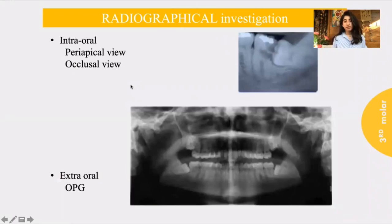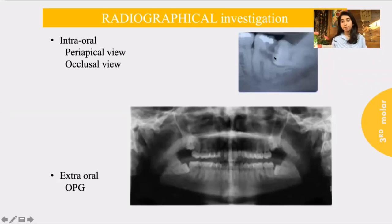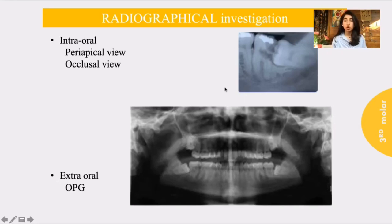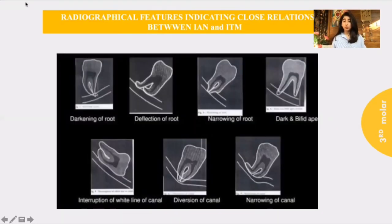Before we take the surgical management of this tooth, we have to take radiographical investigations for the patient. We have intraoral radiographs. The periapical view is the most commonly available one in our clinics, but given the position of the impacted third molar, it's sometimes hard to obtain a correctly positioned periapical view. So the OPG is the most common method. One of the advantages of taking a radiograph is seeing the features indicating the close relationship between the inferior alveolar nerve and the impacted third molar.